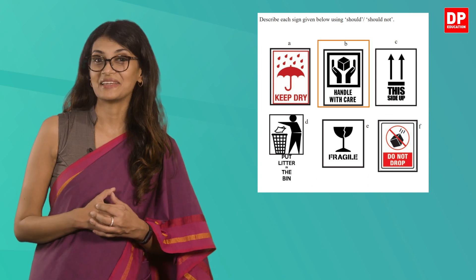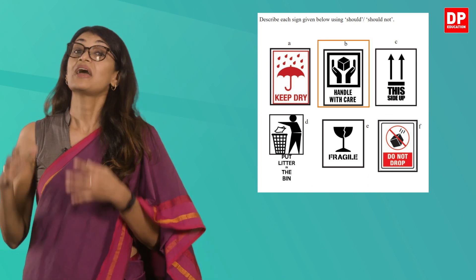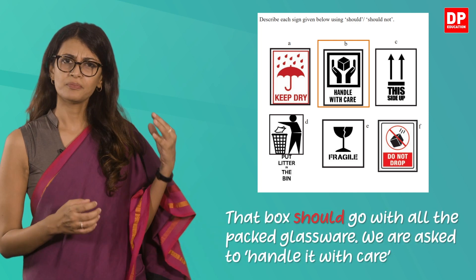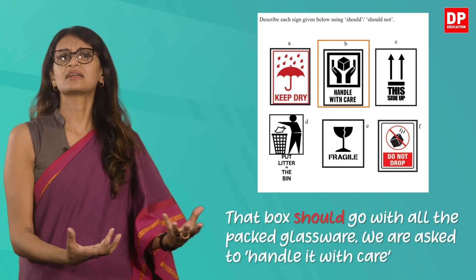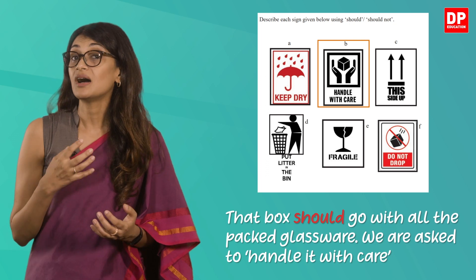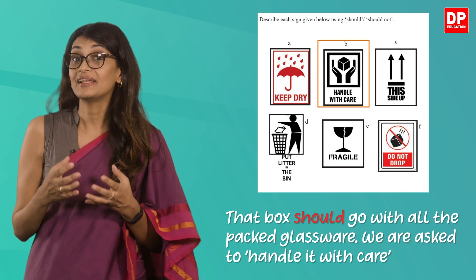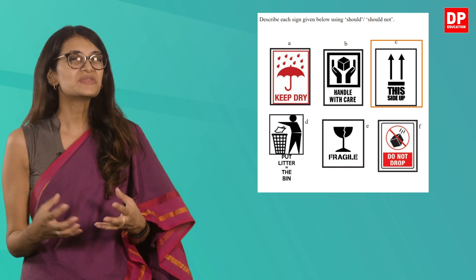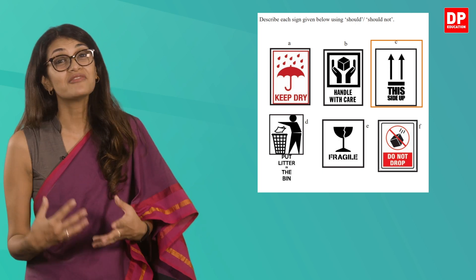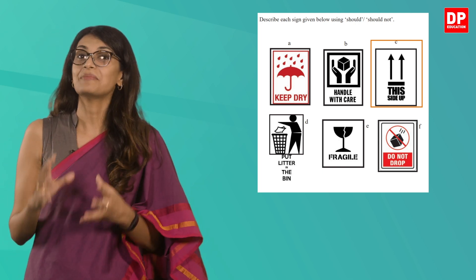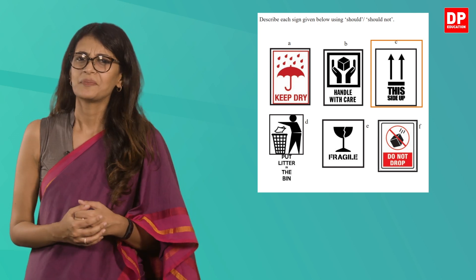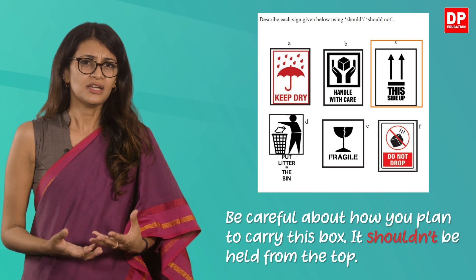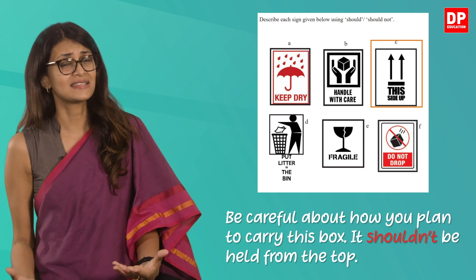Let's look at the second sign — it states to handle with care. So you can say: that box should go with all the packed glassware; we are asked to handle it with care. Sign C is usually placed on boxes that have to be carried in a particular manner. You can say: be careful about how you plan to carry this box — it shouldn't be held from this side.